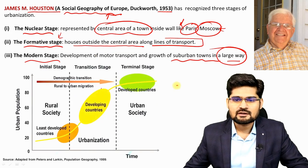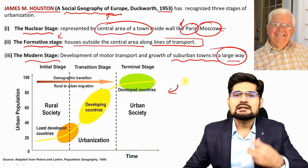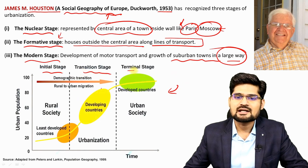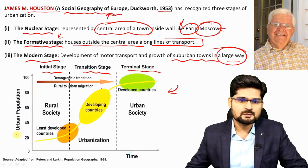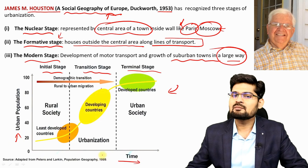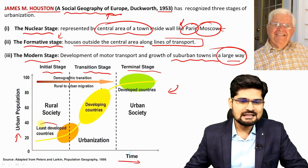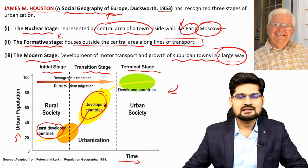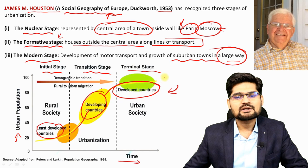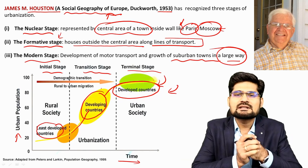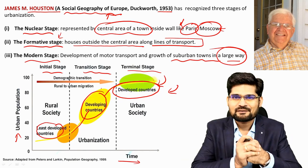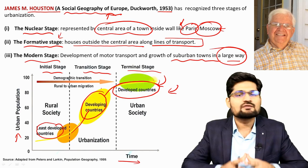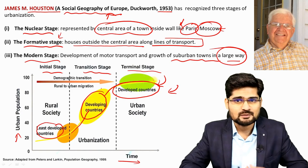Looking at the transformation process through a graph, we see an initial stage, transition stage and terminal stage. Looking at urban population over time, least developed countries gradually transform to developing countries and then further to developed countries. This mirrors what we learned in the population transition model — the demographic transition theory is what we look into in terms of the process of urbanization.